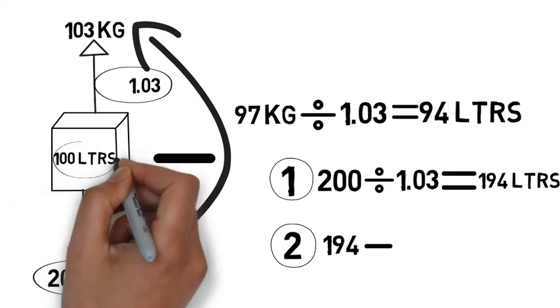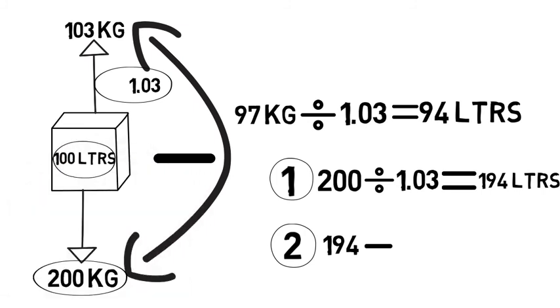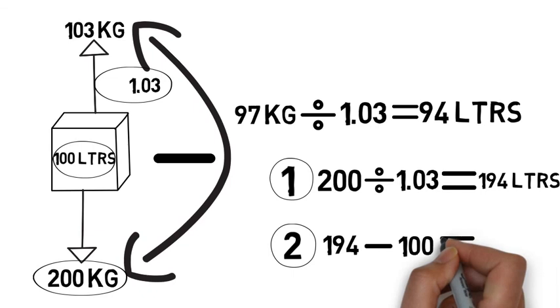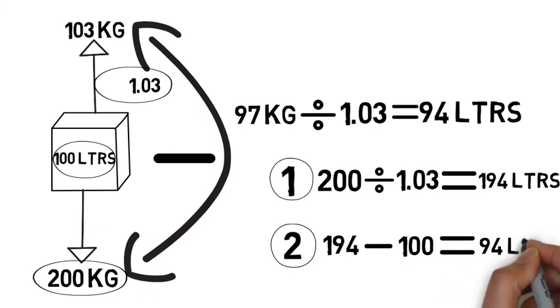The volume of the object is 100 liters. We'll put that in, and 194 minus 100 gives us 94 liters. That's the part of the displacement that the lift bag needs to do to make it neutrally buoyant.